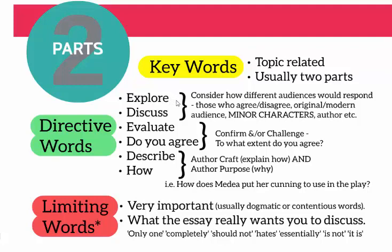Then you're also going to have a directive word. Words like 'explore' or 'discuss' are asking you to consider the different audience perspectives on the question — those who agree or disagree, an original audience's response compared to a modern audience, what minor characters might think, what the author thinks. A directive word like 'evaluate' or 'do you agree' is asking you to confirm or challenge it, or both, and to think about to what extent you agree. A question that starts with 'describe' or 'how' is an author craft or author purpose question — it's asking you to think about how Euripides constructs something and why.